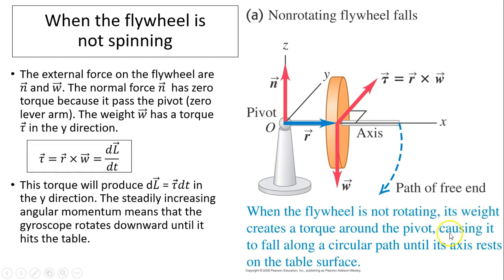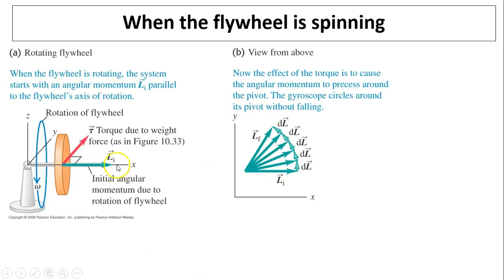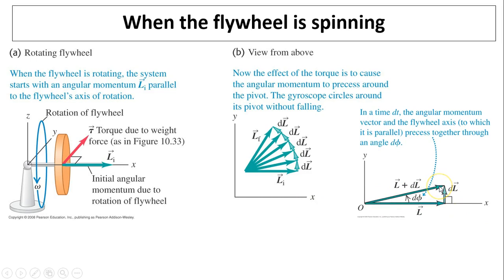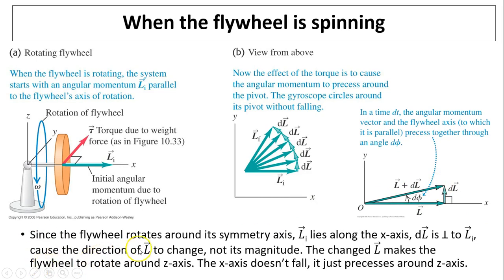When a flywheel is not spinning, we know this flywheel will fall down. This is because torque will change the angular momentum. And angular momentum is pointing into the page. It will make it fall down. But when a flywheel is spinning, you will have initial L is in the x direction. This torque will produce dL in that direction. So this becomes a new L. And that's why this thing will start to turn. The flywheel will start to turn. And eventually, it will precess. So this is a new L. And this will make the flywheel turn. Since the flywheel rotates around its symmetry axis, L initial lies along the x axis. dL is perpendicular to L initial. What's the direction of L to change? Only the direction changes, not magnitude. The change in L makes the flywheel rotate around the z axis. And the x axis doesn't fall. It just precesses around the z axis.